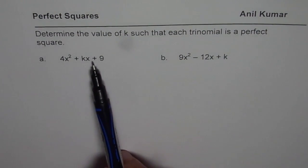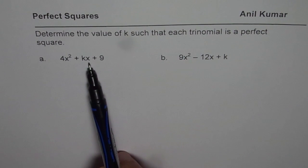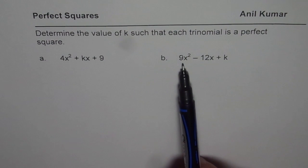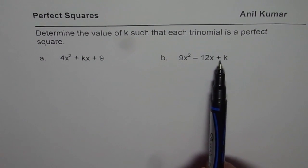So we have these two questions for you. 4x² + kx + 9, we need to make it a perfect square. What are possible values of k? In this case, 9x² - 12x + k.